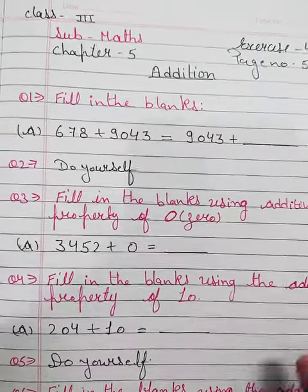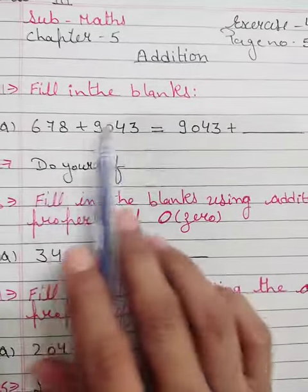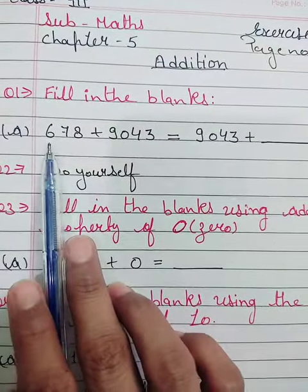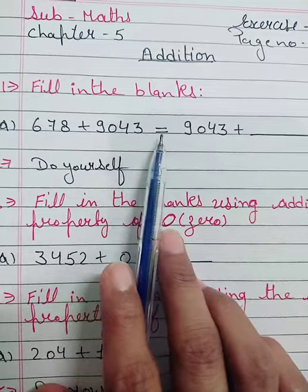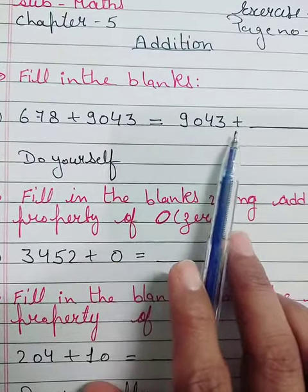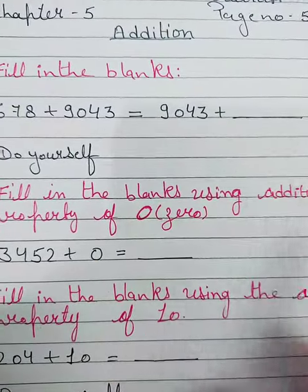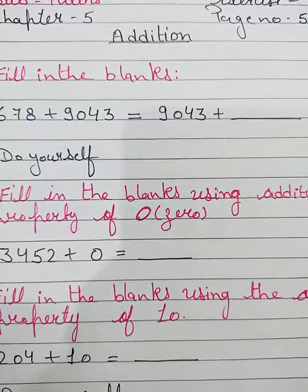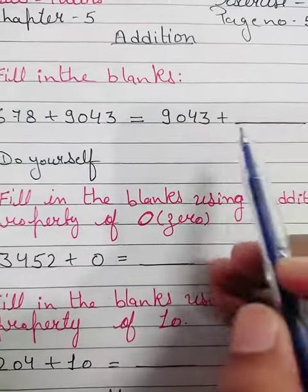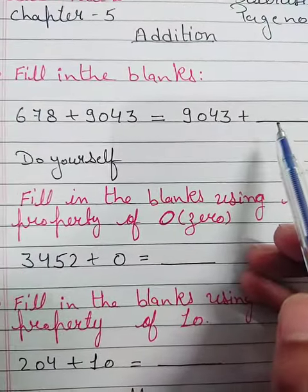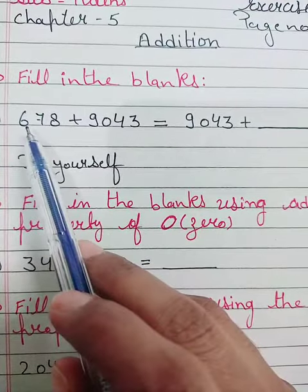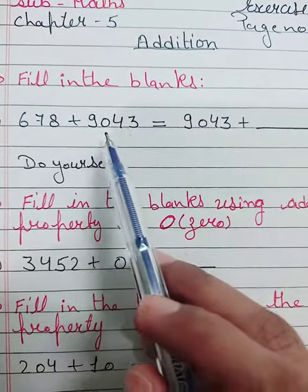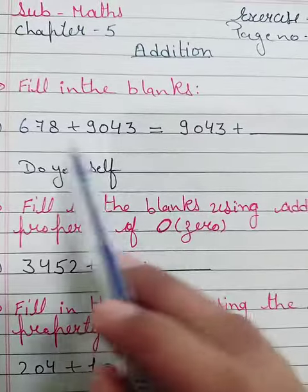Firstly, you will write fill in the blanks. Question number 1: 678 + 9043 = 9043 + blank. Now you will write on the blank space. Here you can see 678 + 9043 is equal to the same digits.